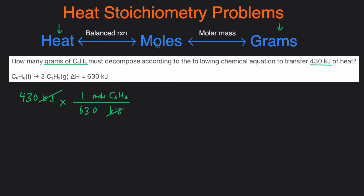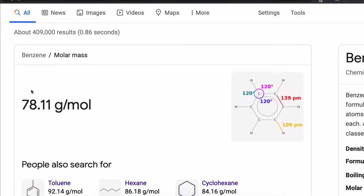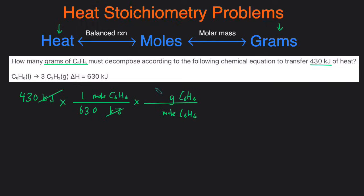Now we convert moles to grams — the second conversion. We multiply by another conversion factor, putting moles of benzene on the bottom so it cancels out and grams of C6H6 on top. For this part we use the molar mass of benzene, which is 78.11 grams per mole. So we put 78.11 grams of benzene for every one mole of benzene. The moles of benzene cancel out and we're left with grams. Calculating: 430 divided by 630, then multiplied by 78.11, gives 53.3 grams of benzene.